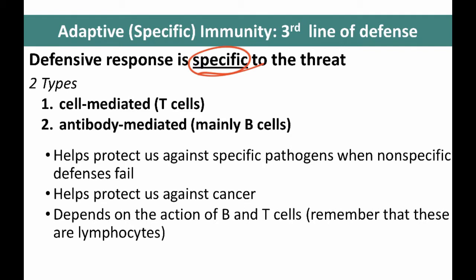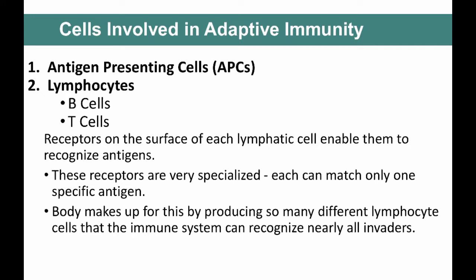When our nonspecific defenses fail, this arm of the immune system kicks in. But it's also important to remember that essentially as soon as the innate immune response begins — when you start to have phagocytosis of microbes and an inflammatory response — this third arm, the third line of defense, kicks in. The cells involved in adaptive immunity are antigen-presenting cells (APCs), which are one kind of phagocyte or another, and the T and B lymphocytes.